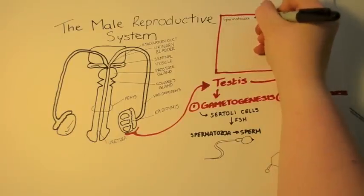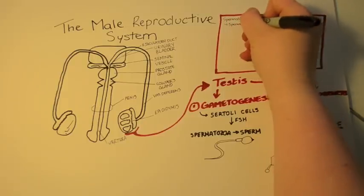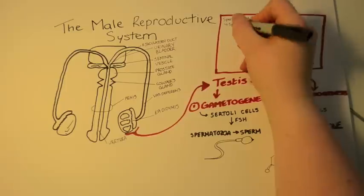Sperm undergoes many different transformations in the sertoli cells. It begins as spermatozoa. Under gametogenesis, it eventually becomes a mature sperm.